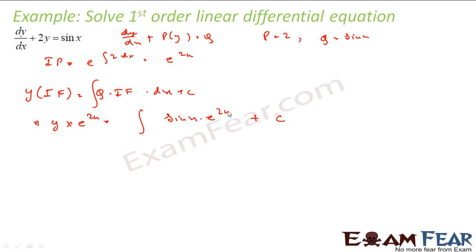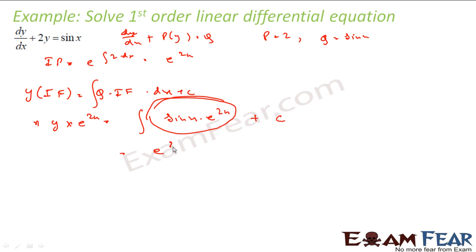Now the trick here is to find the integration of sin x times e to the power 2x, which requires spending some time. You can refer to my videos on integrals where I have found the integration of all such kinds of questions. The value comes out to be e to the power 2x times (2 sin x minus cos x) divided by 5, plus c times e to the power minus 2x. This is the tricky part — you have to use the integration formulas to solve this.